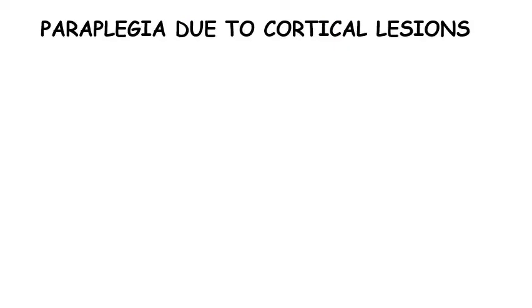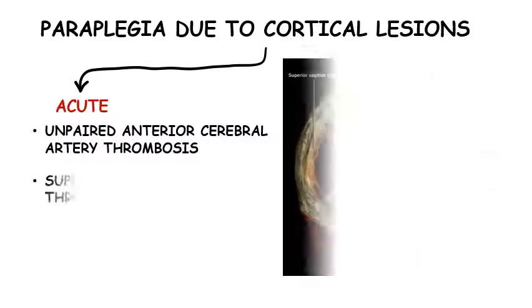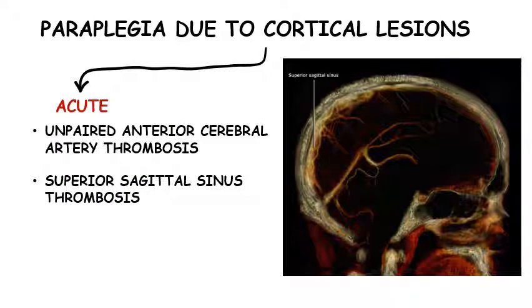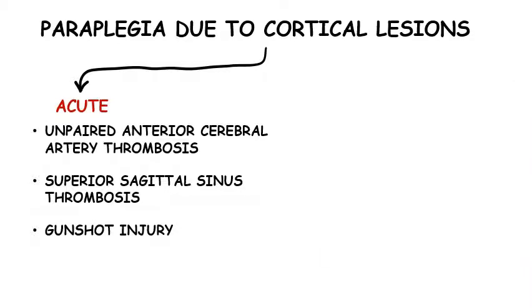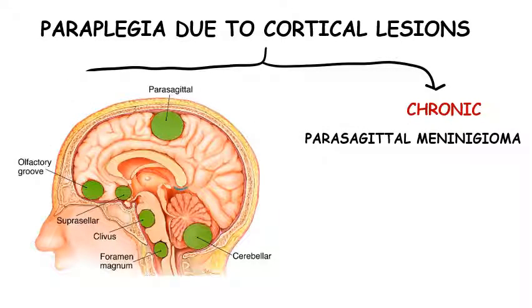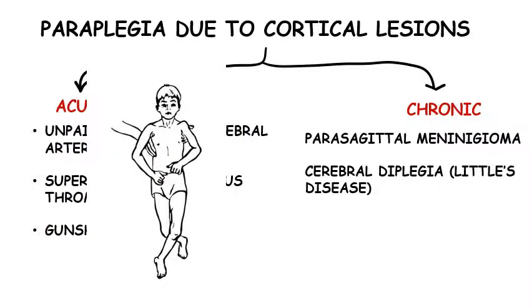Paraplegia due to cerebral or cortical lesions is rare. Acute onset paraplegia due to damage to the brain can be due to unpaired anterior cerebral artery thrombosis, thrombosis of superior sagittal sinus, or penetrating lesions like bullet injury. Some cerebral conditions producing a slower onset may involve parasagittal meningioma and congenital disorders like Little's disease.